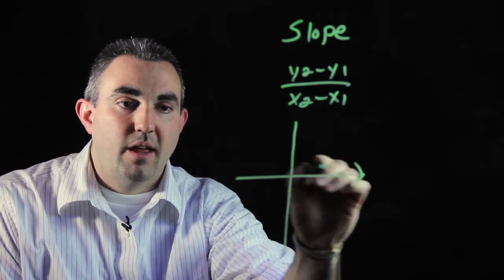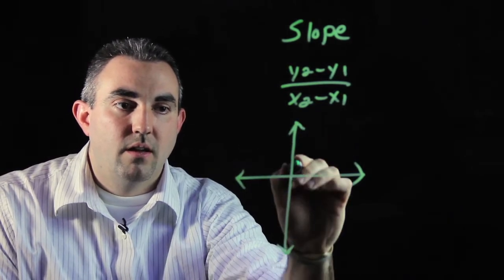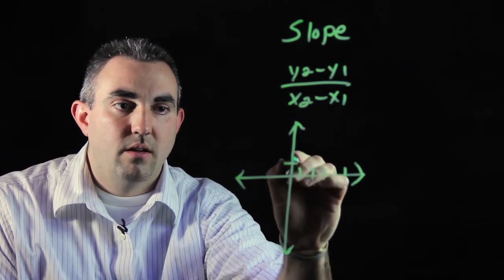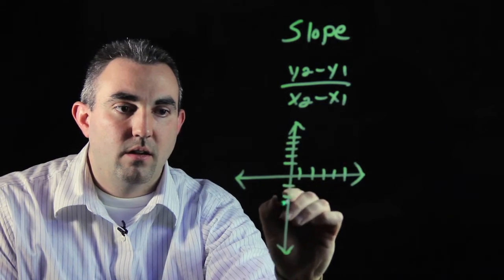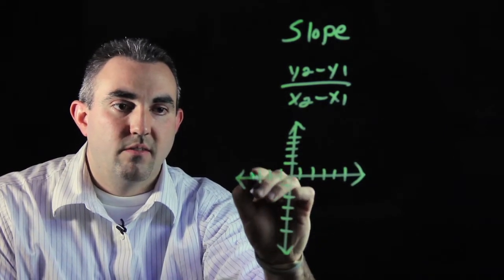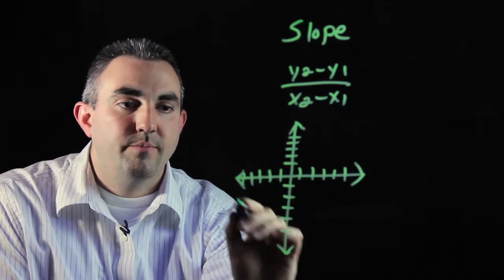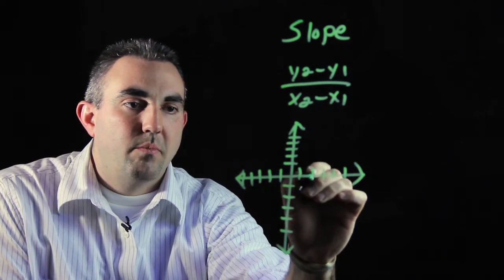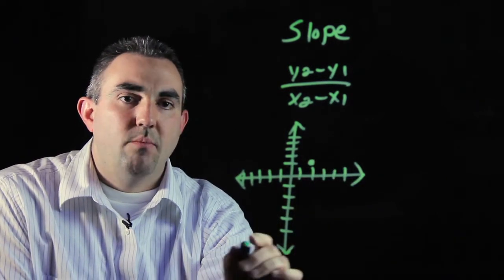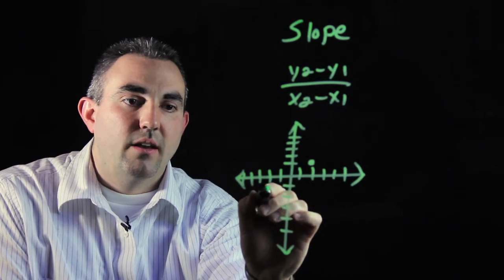Here's a coordinate plane. Five numbers in each direction. Let's plot point (2,1) and point (-2, -1).